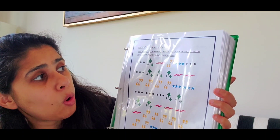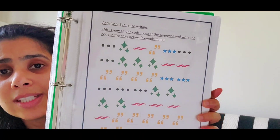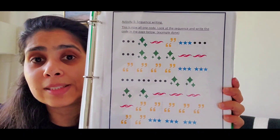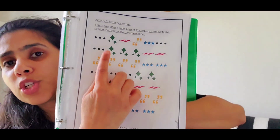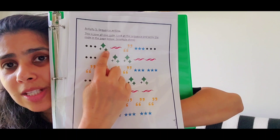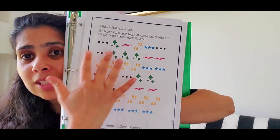Moving on to the fourth activity — the first through third are similar — this one says 'All One Code: look at the sequence and write the code on the page below, example is done.' I've used a blend of images where kids need to concentrate and identify how the code should be written. The code is written on the back page: A, B, C, D, E for the first sequence. A represents one image, B another, C, D, E accordingly. Because it's one code, it's not different lines — it's one big paragraph completing the whole page.